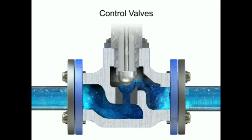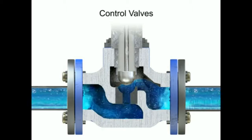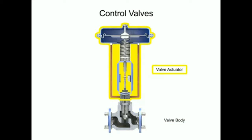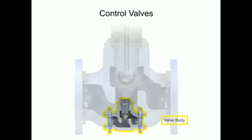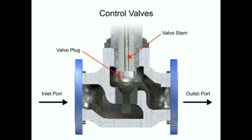Valve actuators control fluid in a pipe by varying the orifice size through which the fluid flows. Control valves contain two major components: the valve body and the valve actuator. The valve body provides the fluid connections and a movable restrictor comprised of a valve stem and plug that is in contact with the fluid to vary the flow. The valve actuator is the component that physically moves the restrictor to vary the fluid flow.